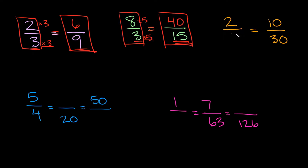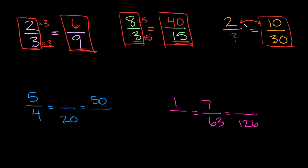Next example: we have two over something is equal to ten over thirty. The easier way to solve this is to go from the fraction that you have to the fraction that you don't have. Ten over thirty — we have this fraction, it's complete. But two over something is incomplete. So we want to go from the complete one to the incomplete one. How do we get from ten to two? Well we would have to divide by five, because ten divided by five is equal to two.